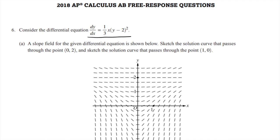Part A says a slope field for the given differential equation is shown below. Sketch the solution curve that passes through the point (0,2) and sketch the solution curve that goes through the point (1,0). So maybe I'll do those in different colors—the one that goes through (0,2) will be in red, and this one through (1,0) in blue.